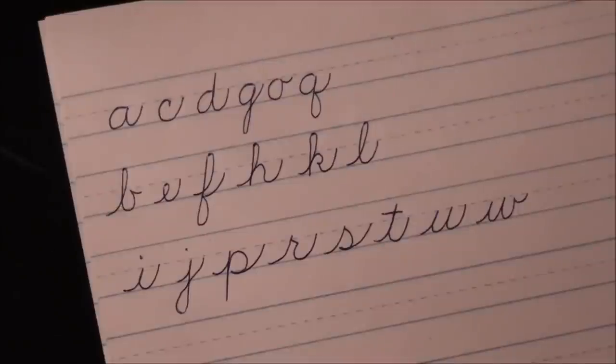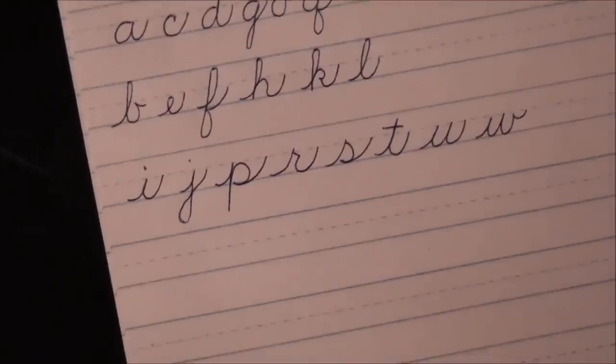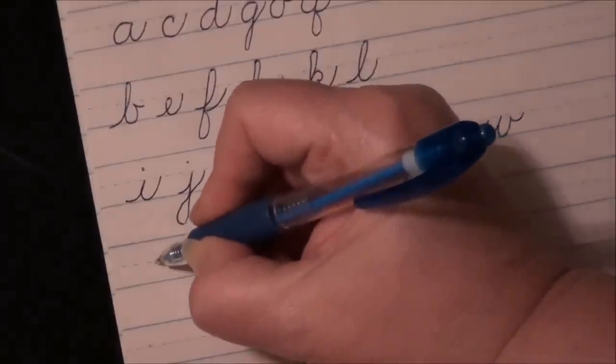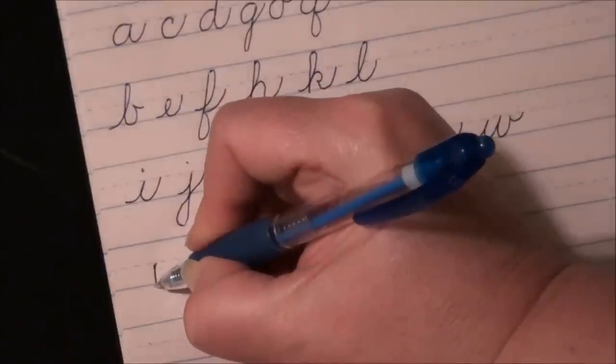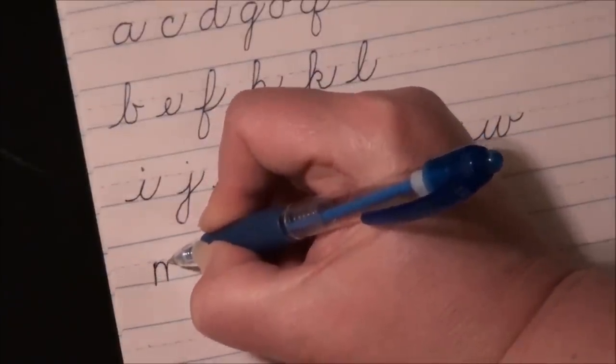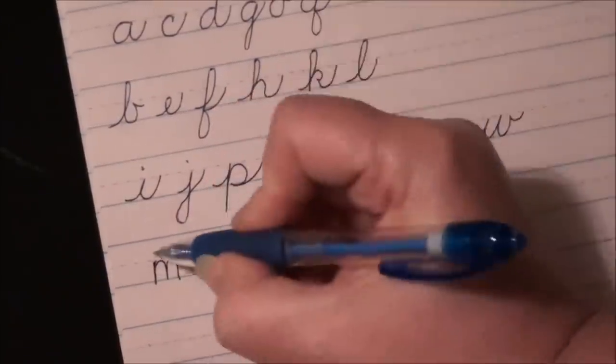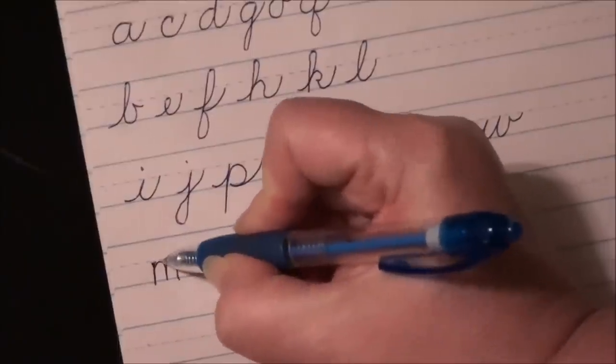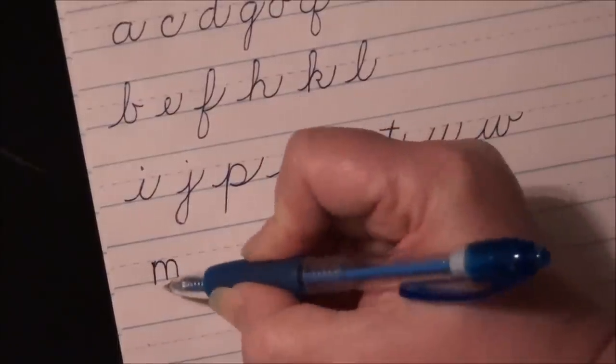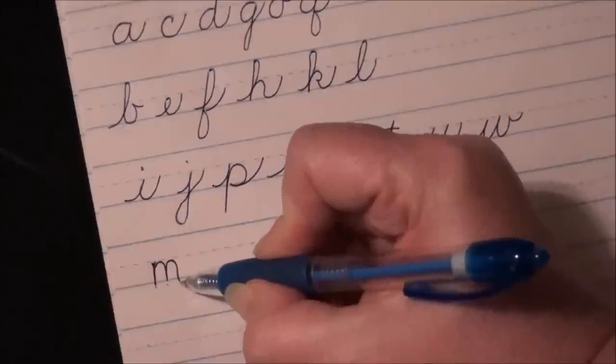So our first one is M. Now M and N are tricky because it's very tempting to make too many humps on an M. So first let's analyze printing M first. The way you're supposed to do printing M is to come down from the midline and then make two humps next to it. Okay, so you touch the midline one, two, three times. You touch the baseline one, two, three times.